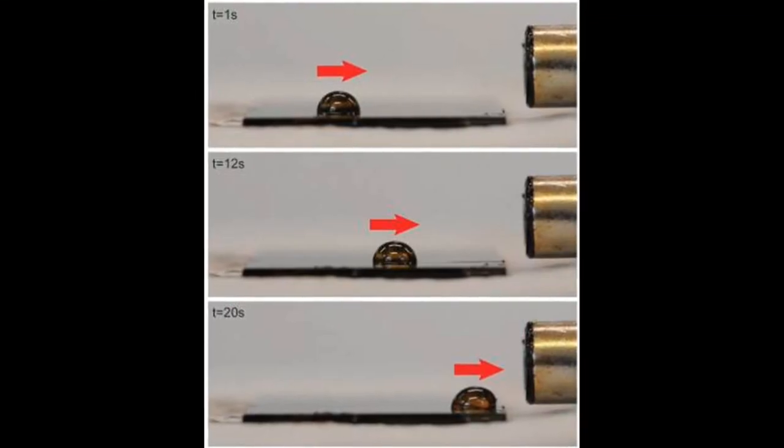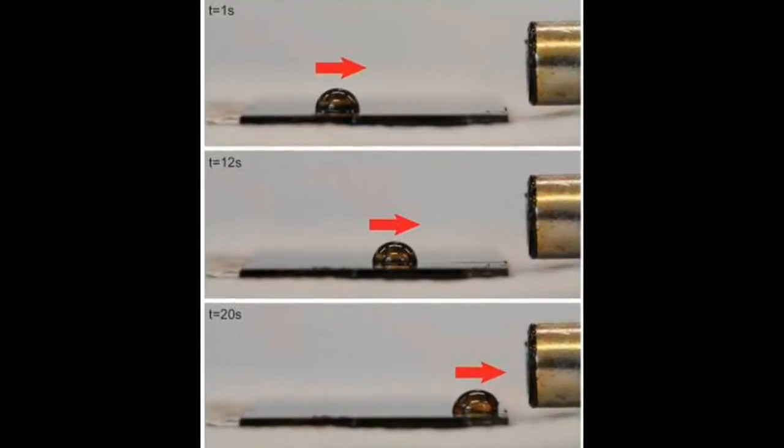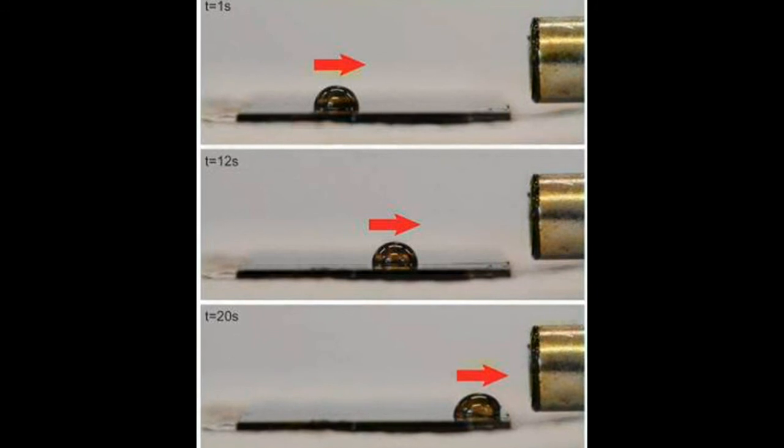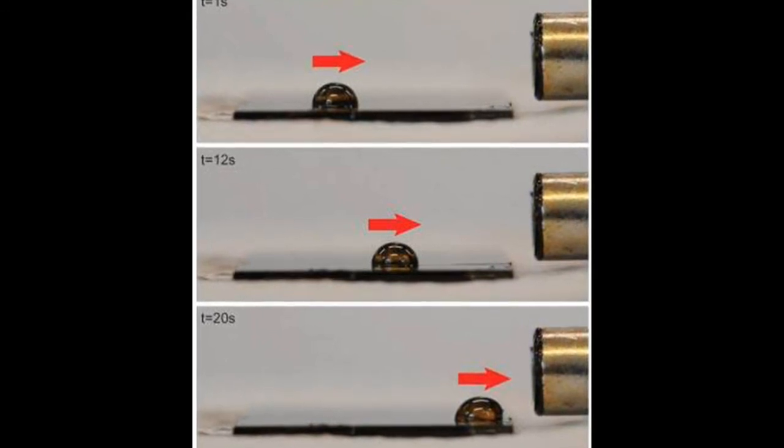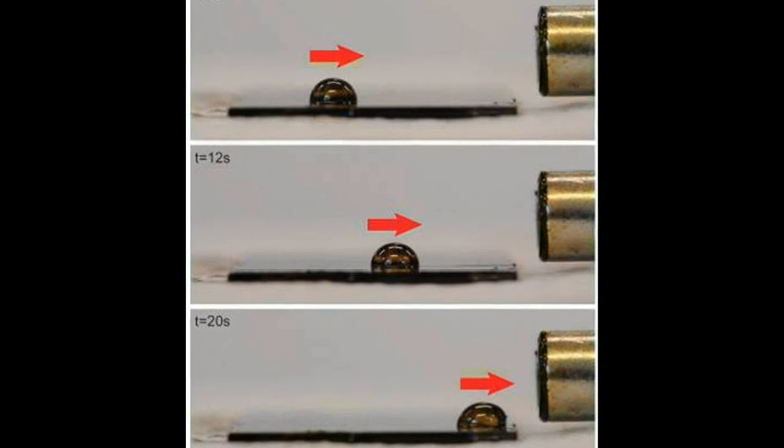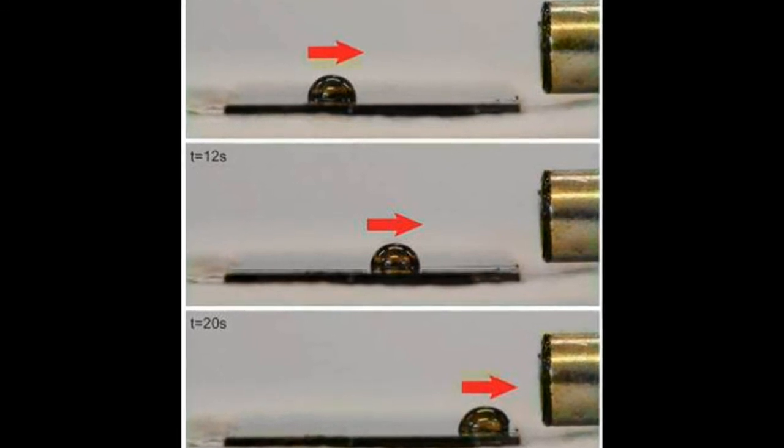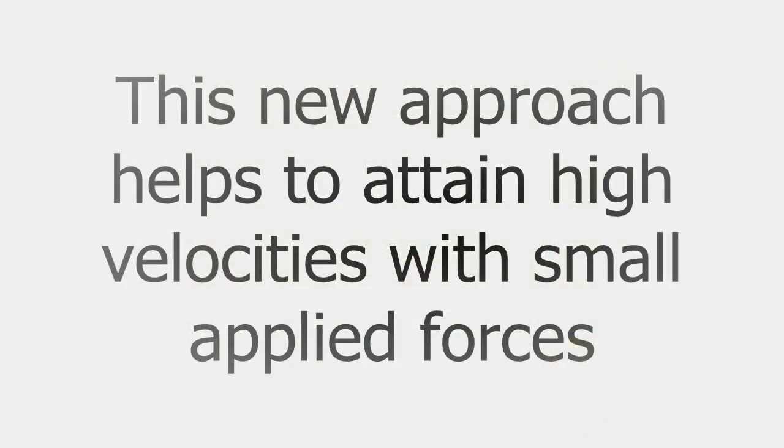While other researchers have developed systems that use magnetism to move particles or fluids, these require the material being moved to be magnetic and very strong magnetic fields to move them around. The new system, which produces a super-slippery surface that lets fluids and particles slide around with virtually no friction, needs much less force to move these materials. This allows to attain high velocities with small applied forces.